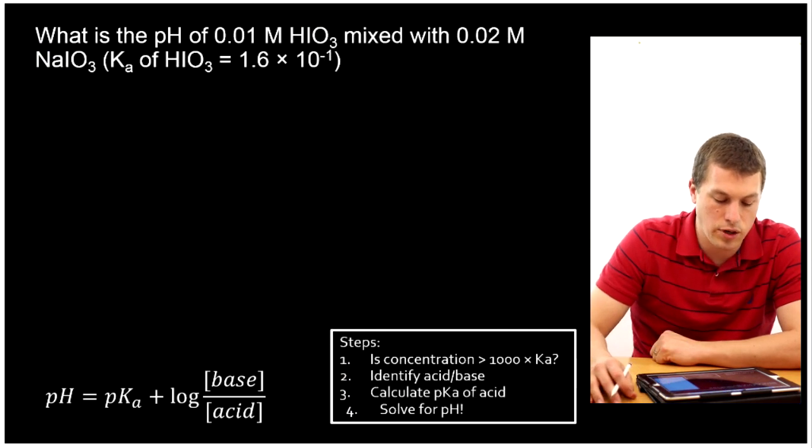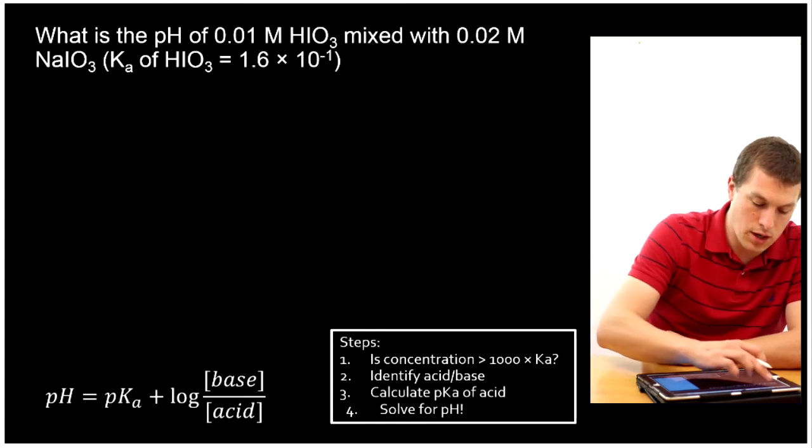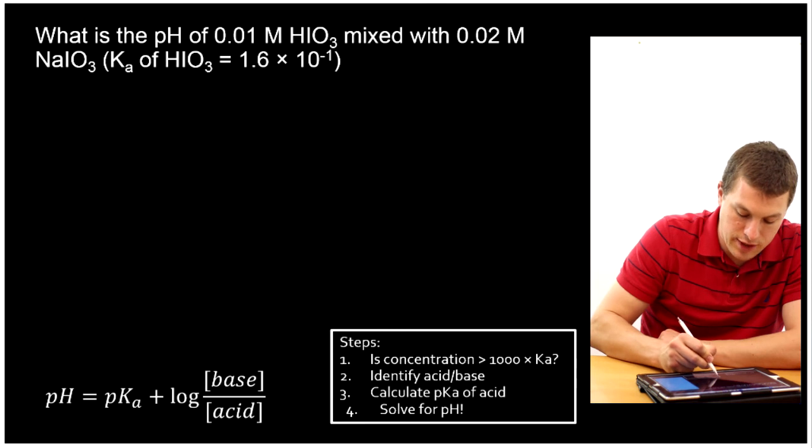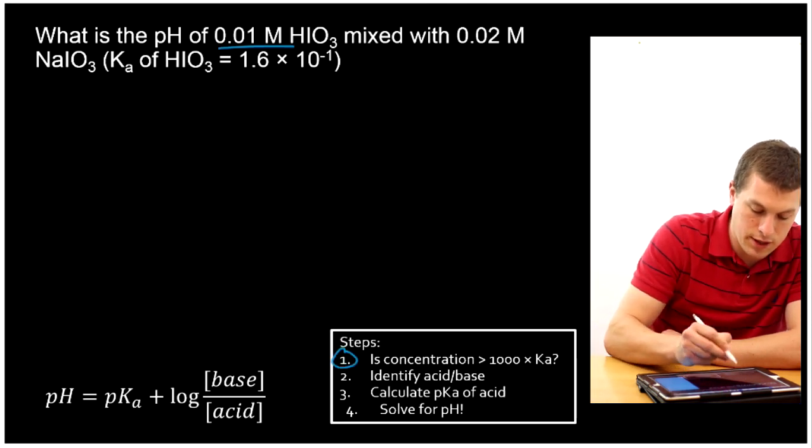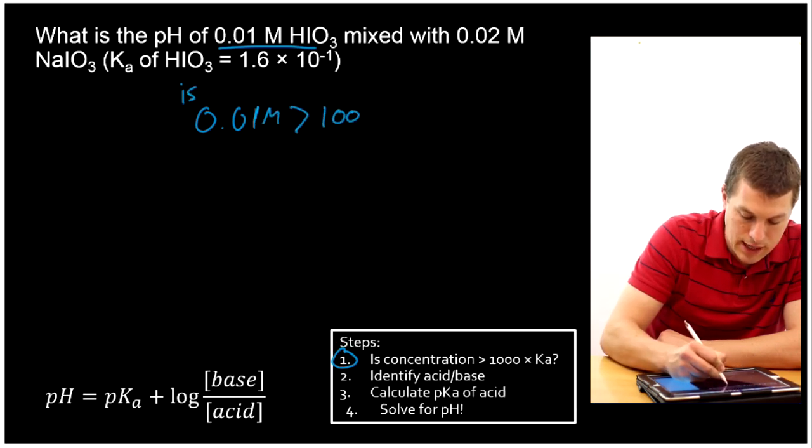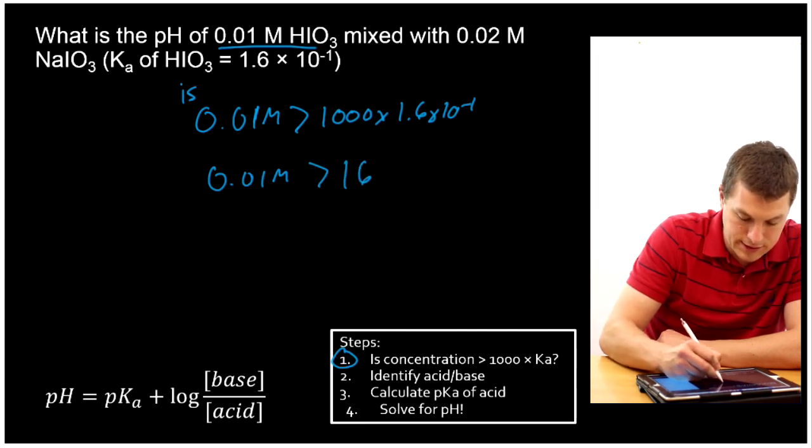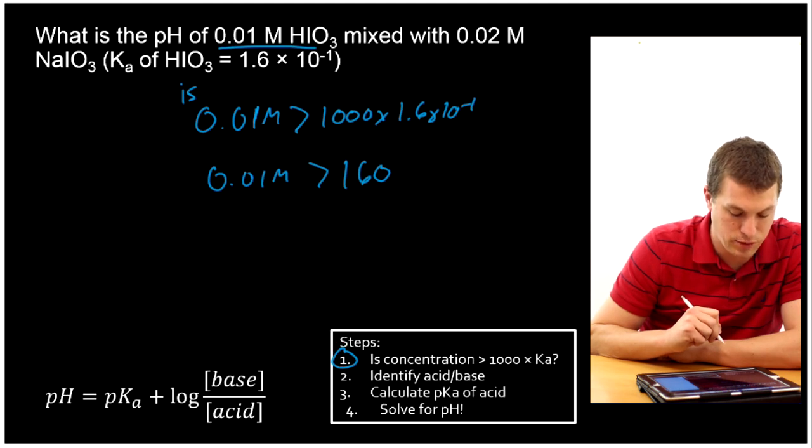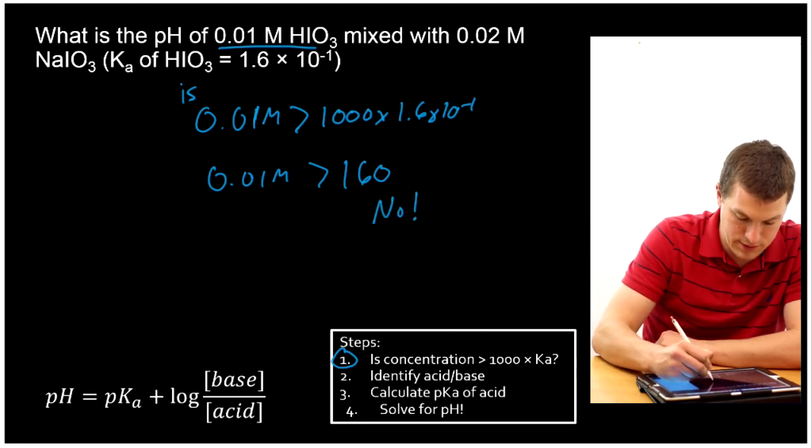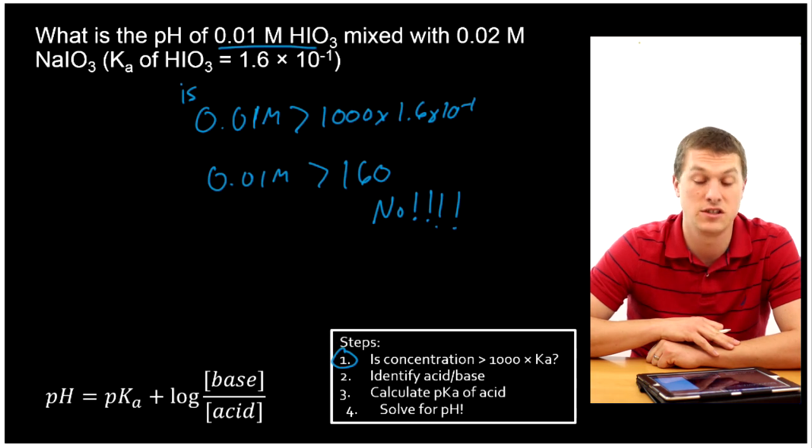Let's do one more example. I want to know what is the pH of 0.01 molar iodic acid mixed with 0.02 molar sodium iodate. Let's start by checking to see if the concentration is a thousand times greater than Ka. We'll take our smaller concentration, 0.01 molar. Is this greater than a thousand times 1.6 times 10 to the minus 1? When I plug that right side into my calculator, I will get 160. So the question is, is 0.01 greater than 160? And the answer is no. So that means that I can't use the Henderson-Hasselbalch. It doesn't work here. The Henderson-Hasselbalch only works when our concentration is much bigger than our Ka.